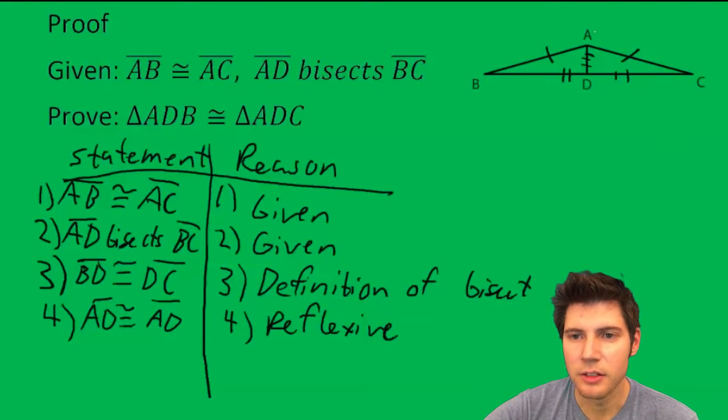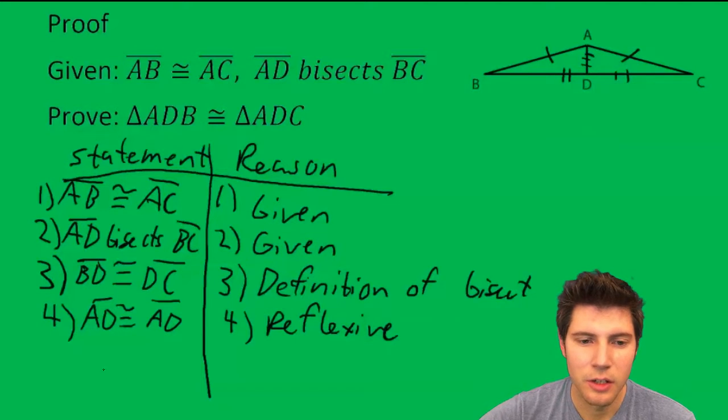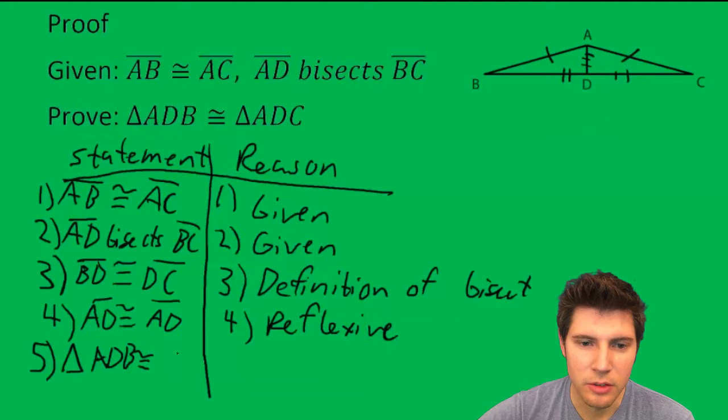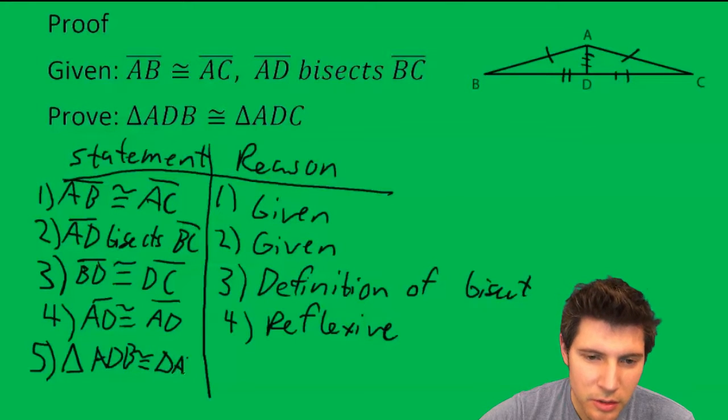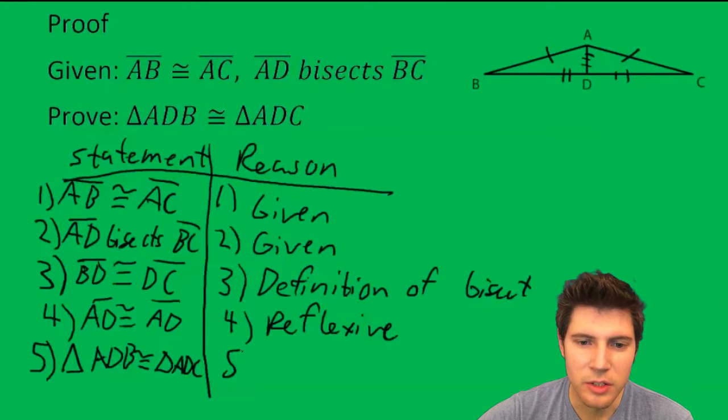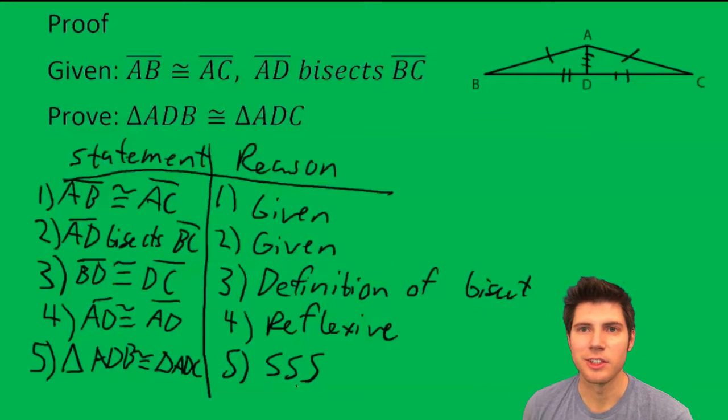And now I have a side congruent to a side, a side congruent to a side, and a side congruent to a side. So I am done. Triangle ADB is congruent to triangle ADC. And the reason is SSS. And that's it.